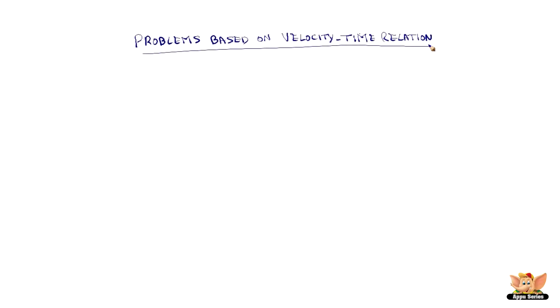Problems Based on Velocity Time Relation. A bus starting from rest moves with uniform acceleration of 0.1 meter per second square for 2 minutes. Find the velocity acquired.